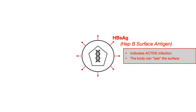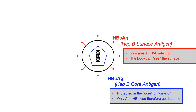The next thing we need to talk about is the inner or core component of the virus, shown in blue. Here we have the hep B core antigen. So when you see HBcAg, that C stands for core. This is protected in the core or capsid of the virus, and therefore you can't detect the hep B core antigen — you can only detect the antibody to HBC. More on antibodies in just a few slides.